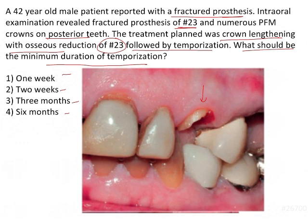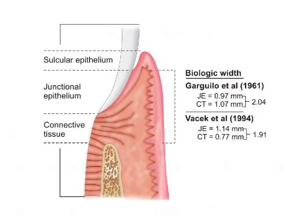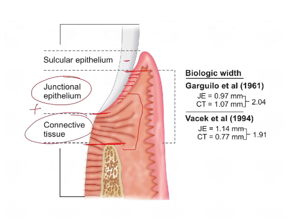What has been asked in the question is very technical, so let us understand the concept of biologic width first. From here to here there is some amount of epithelium in contact with the tooth — this epithelium is known as junctional epithelium. Below the junctional epithelium is the connective tissue up to the alveolar crest. The total of junctional epithelium and connective tissue underneath is known as biologic width.